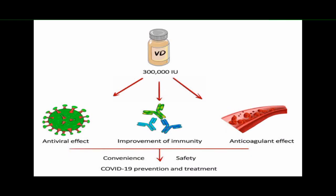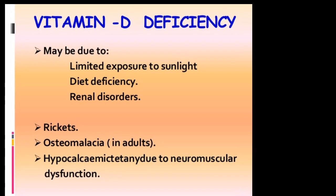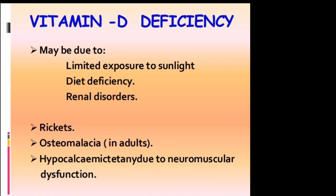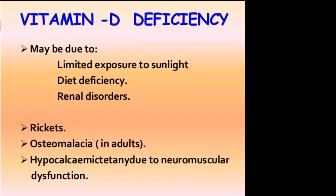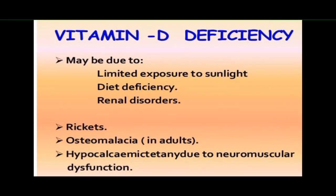People with vitamin D deficiency have a higher risk of hypertension and cardiovascular disease, and they also had longer hospital stays for COVID-19. Vitamin D deficiency occurs in strict vegetarians, chronic alcoholics, and individuals with liver and kidney diseases or fat malabsorption syndromes. It is also prevalent at northern latitudes due to reduced exposure to light, and in people who cover the entire body for religious customs. If the requirement is not met through diet, deficiency of vitamin D leads to demineralization of bones, resulting in rickets in children and osteomalacia in adults.